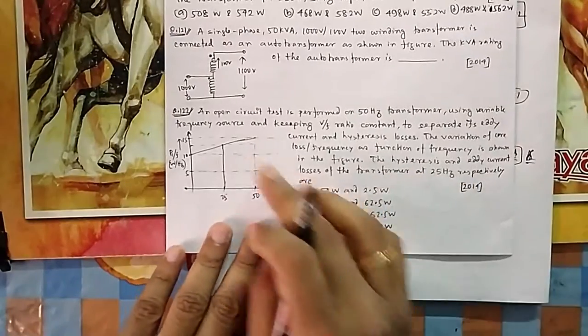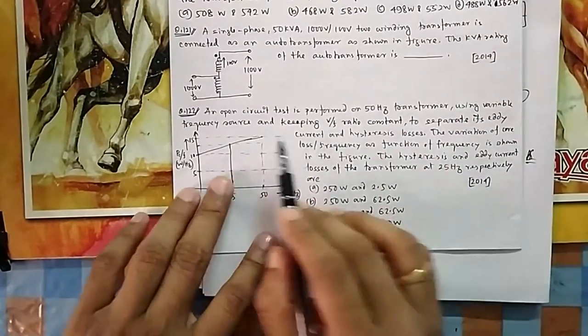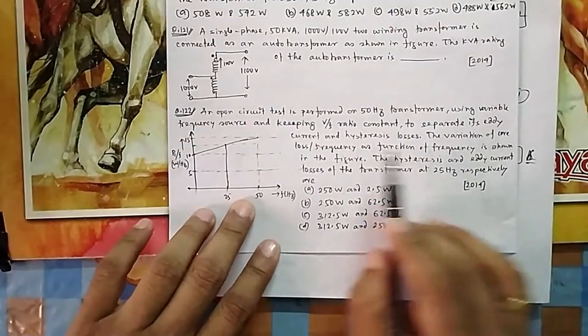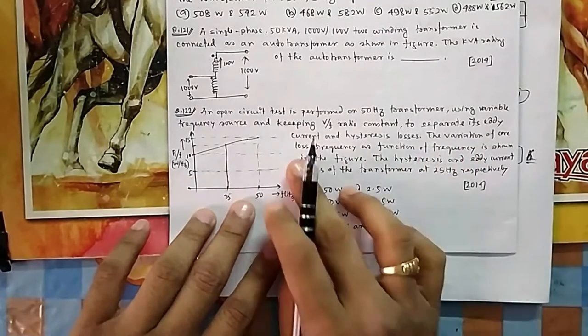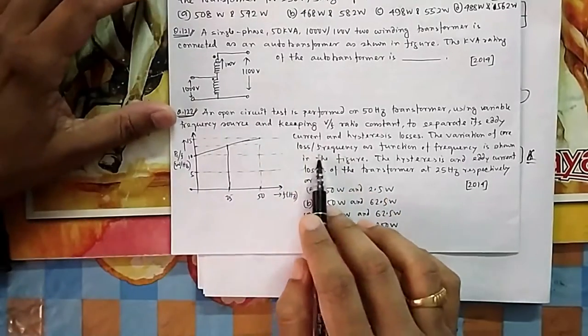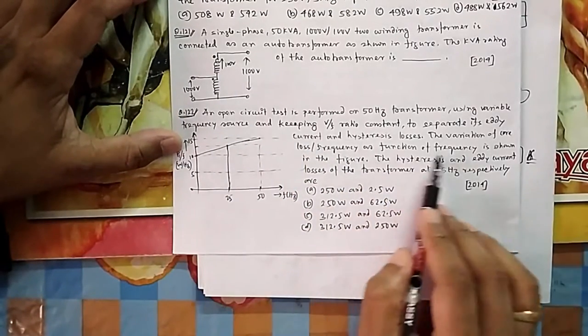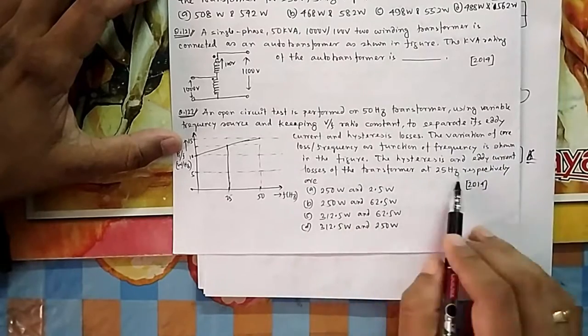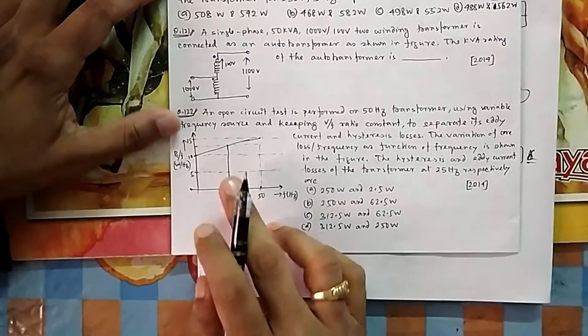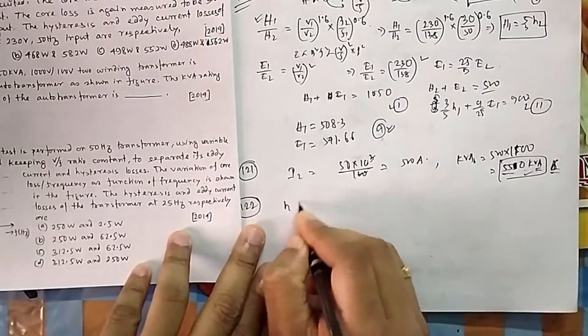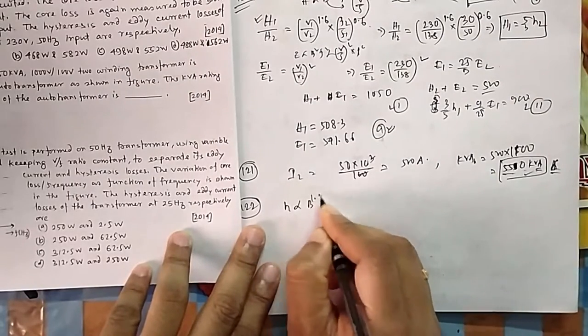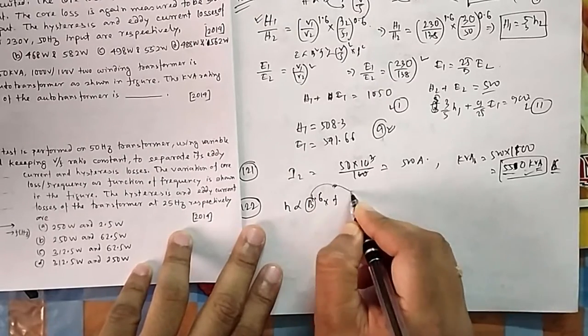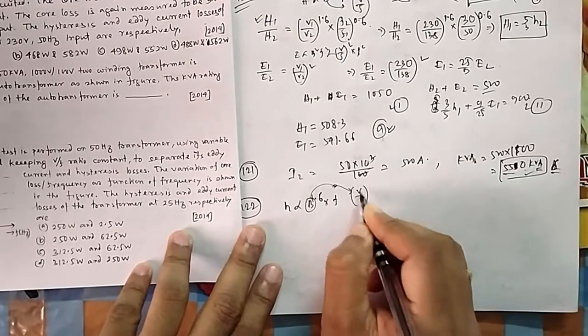Next, question 122: An open circuit test is performed on a 50 Hz transformer using variable frequency source, keeping V by f ratio constant, to separate eddy current and hysteresis losses. The variation of core loss per frequency as a function of frequency is shown in the figure. The hysteresis and eddy current losses of the transformer at 25 Hz are respectively - what are they asking?